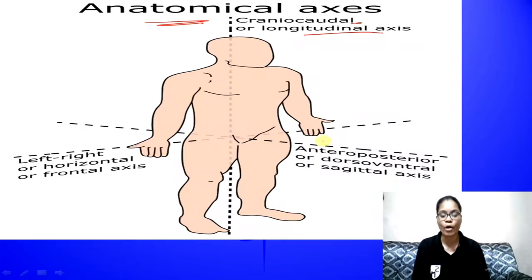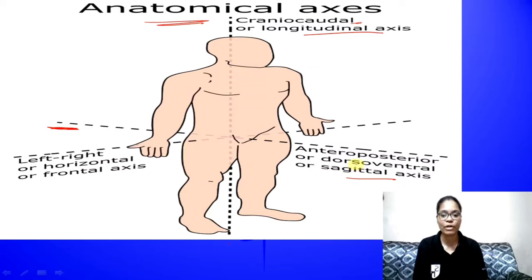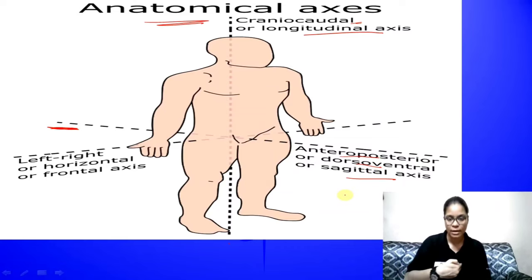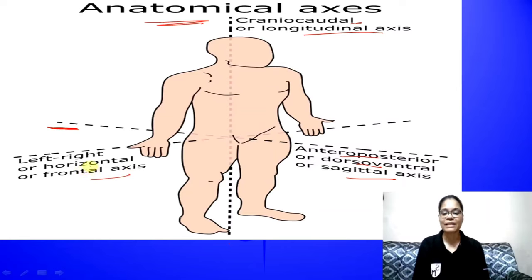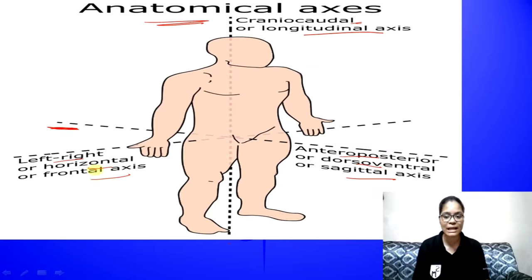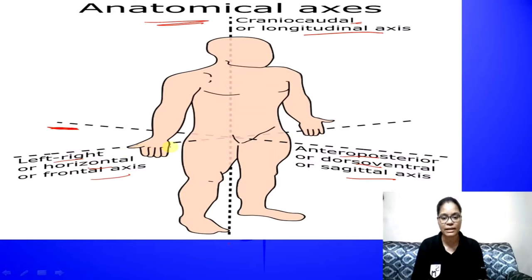There is a line that enters your body from the front side and exits on the posterior side. This is called the Sagittal Axis, also known as the Dorsal-Ventral Axis and the Anterior-Posterior Axis. It is crossed from the front and back of your body. The Frontal Axis is also called the Horizontal Axis and the Left-Right Axis. It is horizontal because it runs parallel to the ground, and left-right because it crosses from left to right — ear to ear and hand to hand.